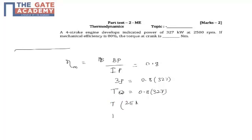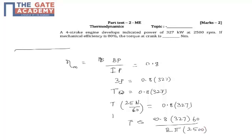Omega can be written as 2π n by 60, which is nothing but 0.8 into 327. So torque is equal to 0.8 into 327 into 60 by 2π n, which is 2500.